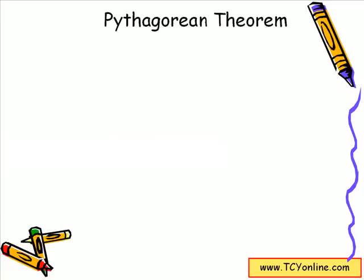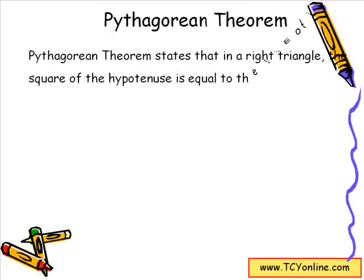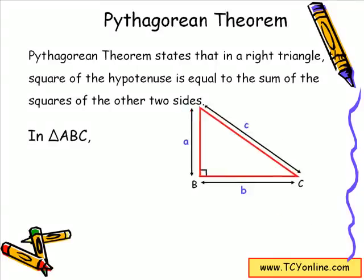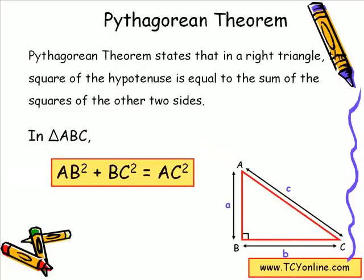Now before proving the Pythagorean theorem, let's look at its definition. The Pythagorean theorem states that in a right angle triangle, the square of the hypotenuse — that is the longest side — is equal to the sum of the squares of the other two sides. For example, in triangle ABC, which is right-angled at angle A, AC is the hypotenuse, while AB and BC are the remaining two sides. So according to the Pythagorean theorem, AB² + BC² = AC².